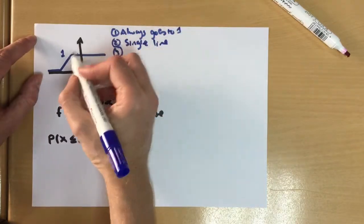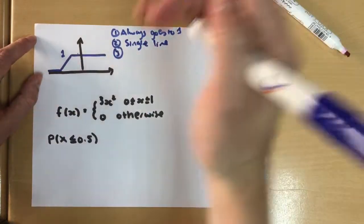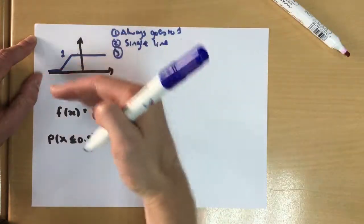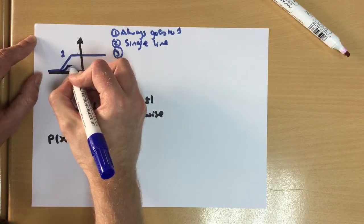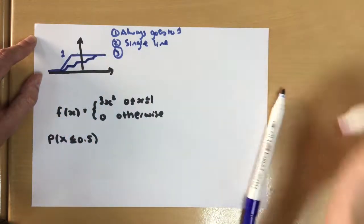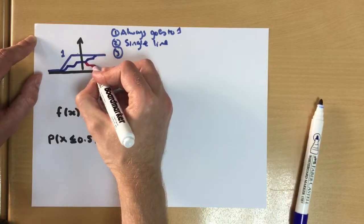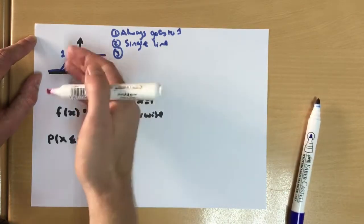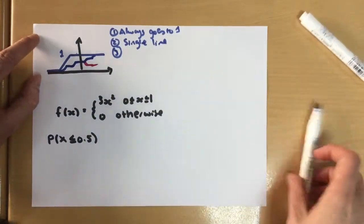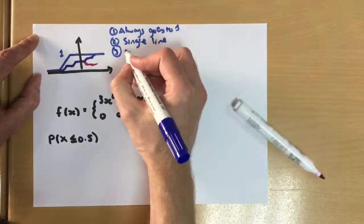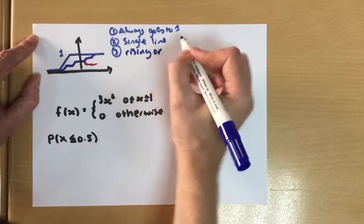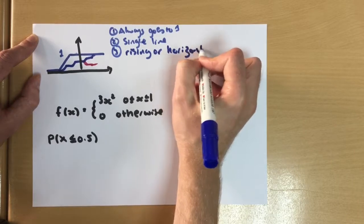Now, this line must always be going upwards, because as we go along, we're always adding in extra probabilities. So it might go up, horizontal, up, horizontal, up, horizontal. But it is never, ever going to start dropping at any points. Because that means as you're going up, it's getting less likely, which makes no sense. So our line is always rising or horizontal.